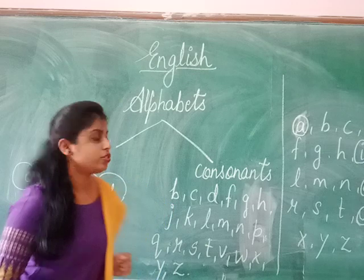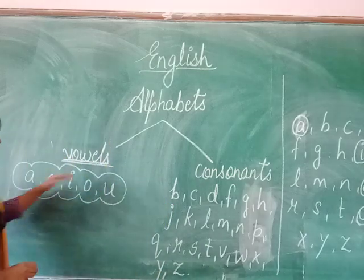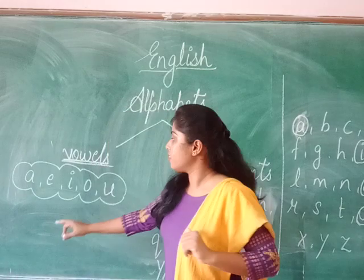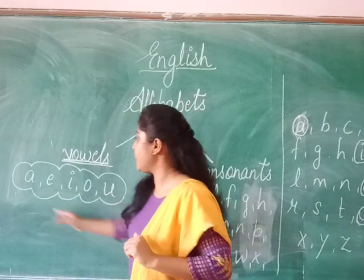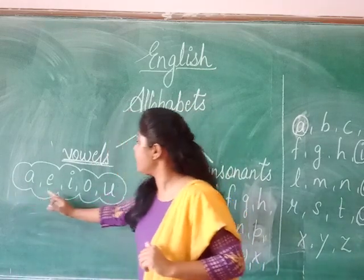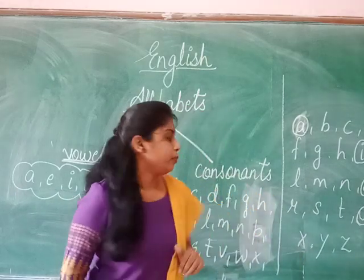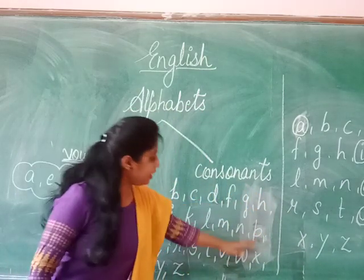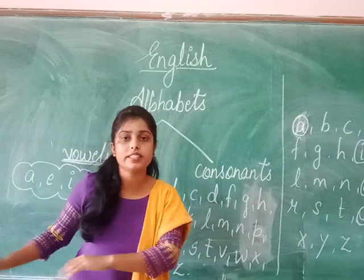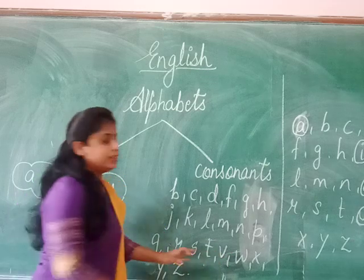So these five letters — A, E, I, O, U — form the vowels. And all the remaining alphabets, except the vowels, are known as consonants.